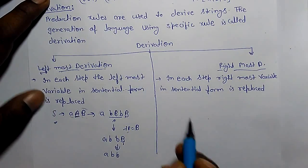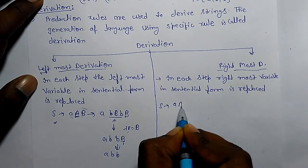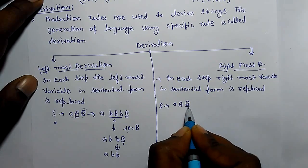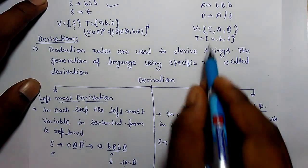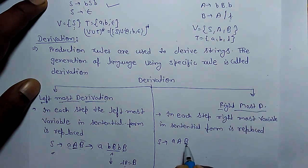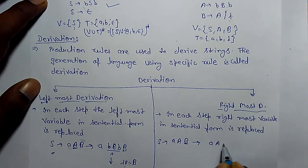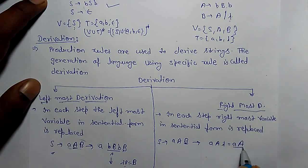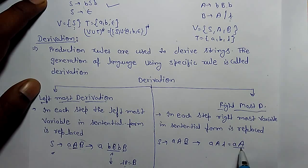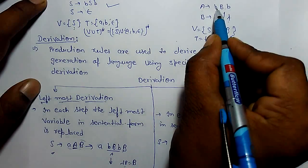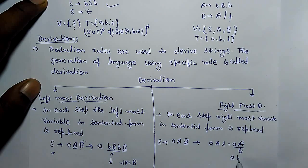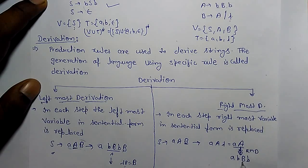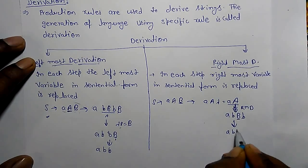Now let's check rightmost derivation. If S derives Aab, the rightmost variable is B. We replace B by lambda, giving capital A. Now the rightmost variable is capital A, so A is replaced by bBb. In rightmost derivation, this remaining B is the only variable, so we replace it directly by lambda, giving abb. So this is rightmost derivation.